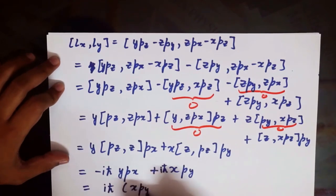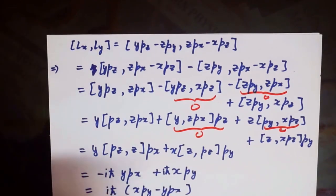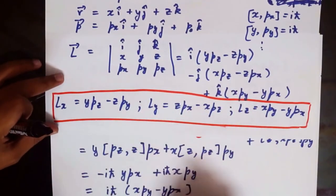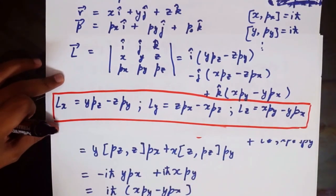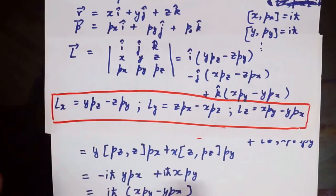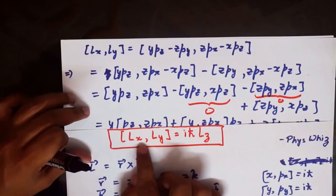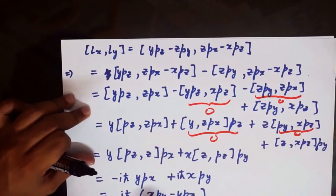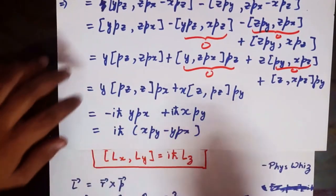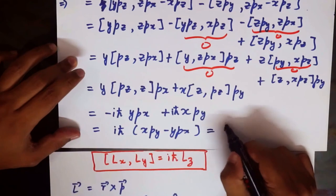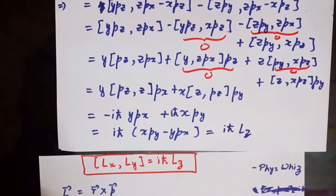Taking iℏ out as a common factor gives iℏ(xPy − yPx). From the beginning of this tutorial we established that Lz = xPy − yPx, so we have derived that the commutator of Lx and Ly equals iℏLz.